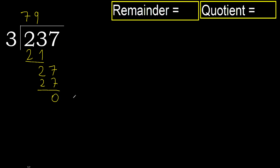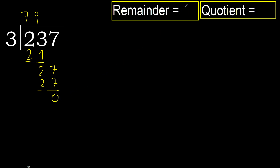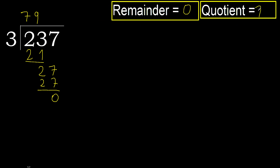There is no next number, therefore finish. Ok, 237 divided by 3 equals 79.